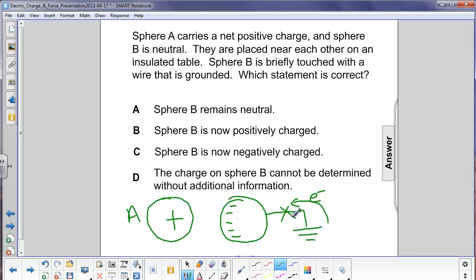When you now remove the ground wire, these excess electrons are stuck on the sphere—can't go anywhere, they can't go out to the air. So we now have sphere B having a net negative charge, and the answer would be C.